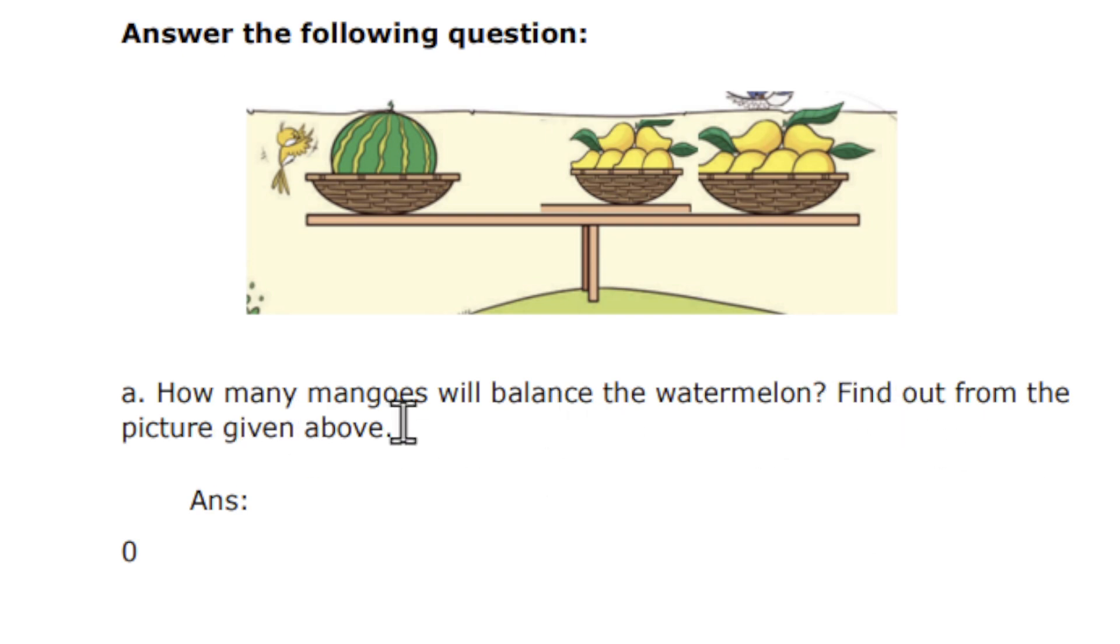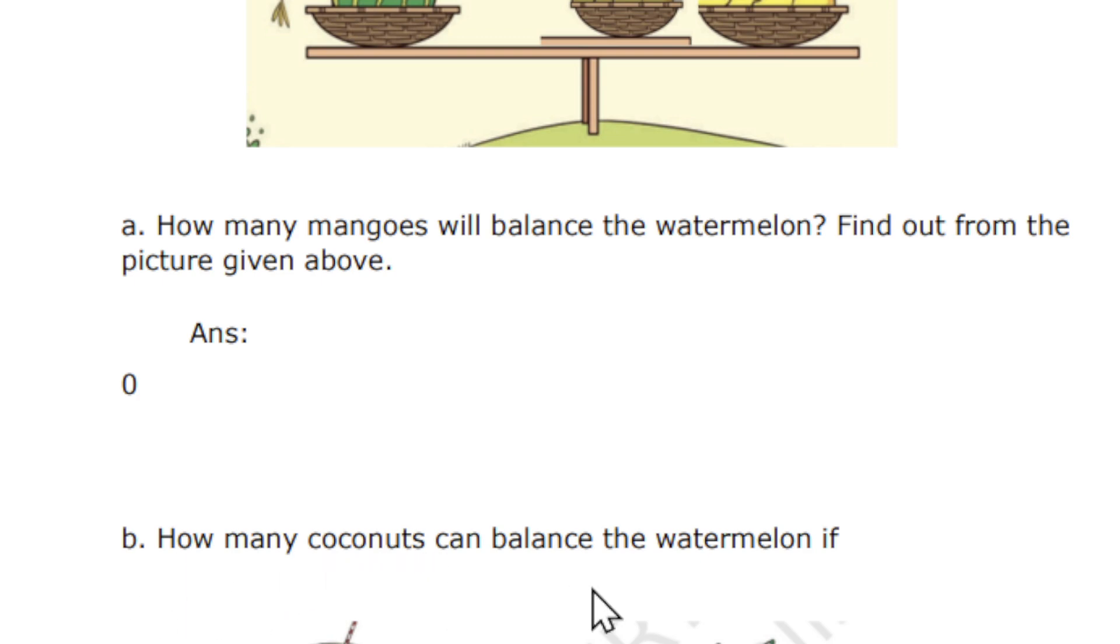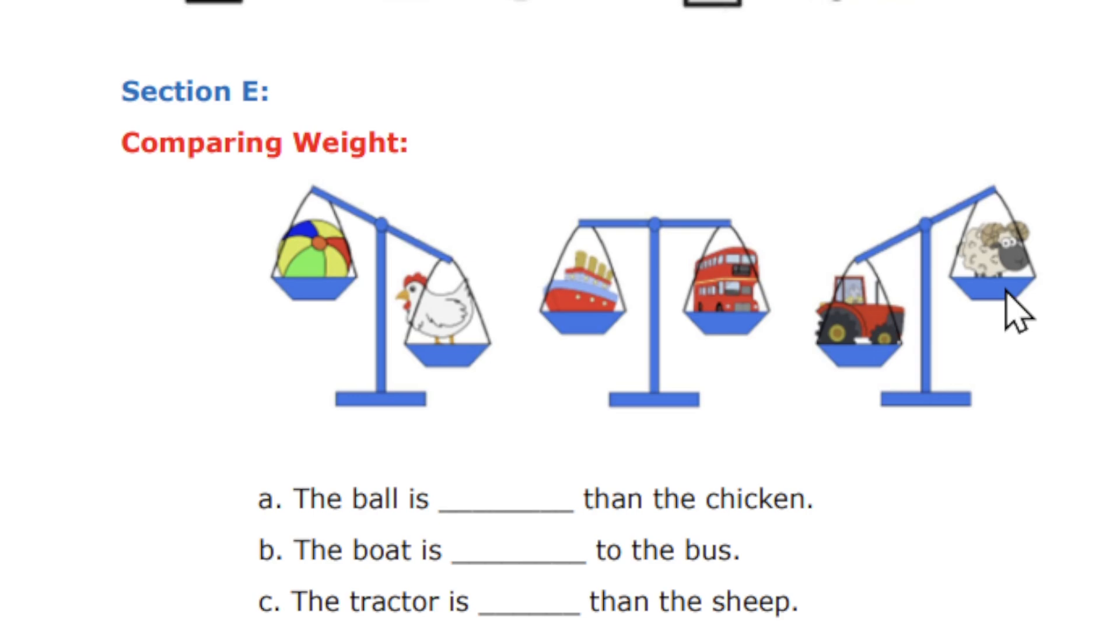Find out the picture given above. So you have to find how many mangoes and then how many coconuts can balance the watermelon if one coconut is equal to weight of two mangoes.